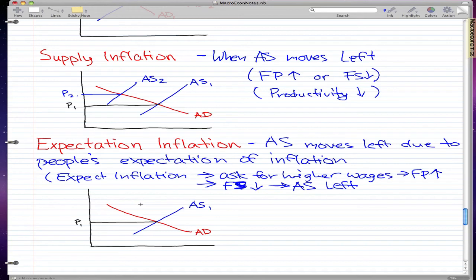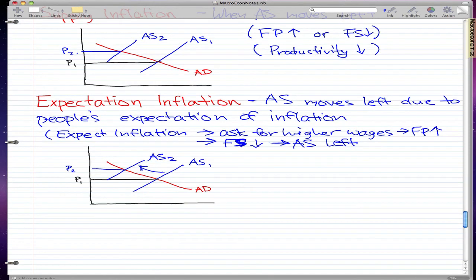This will cause our graph to behave the same way. Our P1 rises to P2, and our AS moves left. The gist of the story is that in this case, the people cause what they feared.